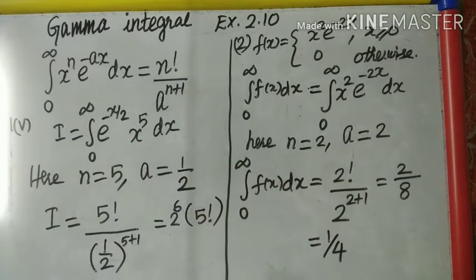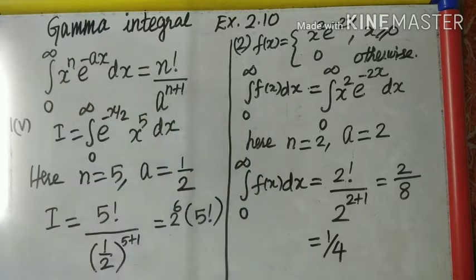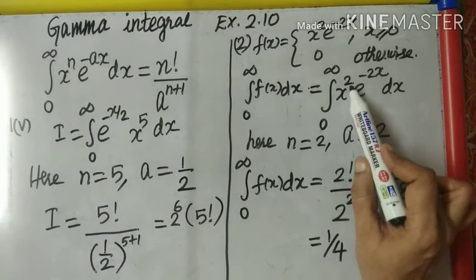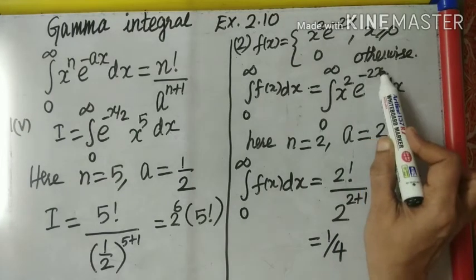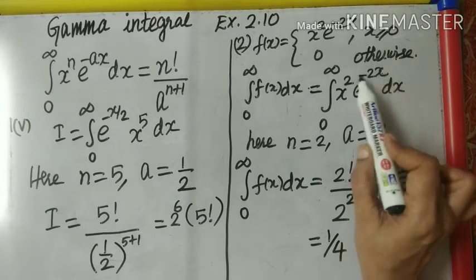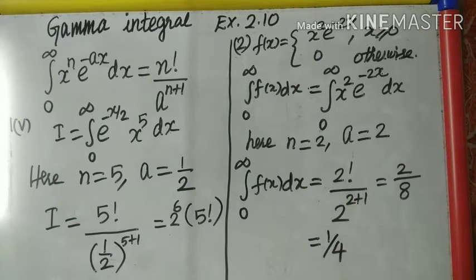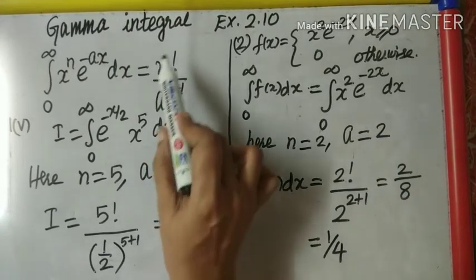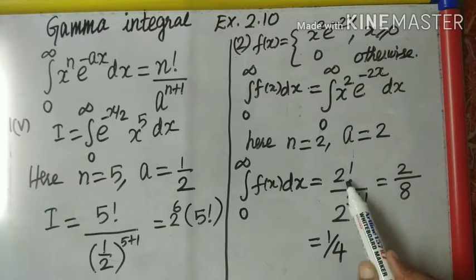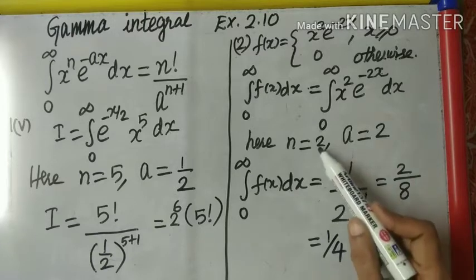Can I check with this formula? Condition 1: limits from 0 to infinity — correct. Condition 2: x to the power of a whole number greater than 1 — that is also correct, so n equals 2. Condition 3: e to the power of negative ax — e to the power negative 2x is correct, and comparing, a equals 2. I know n is 2 and a is 2. Applying the formula: n factorial divided by a to the power n plus 1 gives 2 factorial over 2 to the power 3.